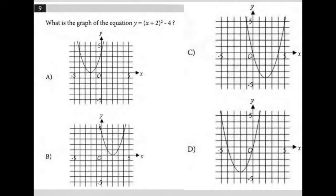This question is a diagram question. Any question that provides some visual input — even if it's in the answer choices — I'm going to call a diagram question. In this case, the question itself doesn't provide the visual input, but the answer choices do. More specifically, what we have in each of these answer choices are graphs.